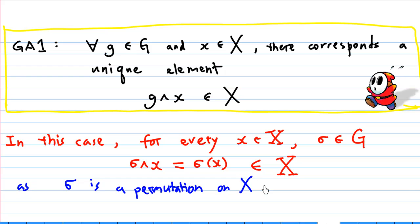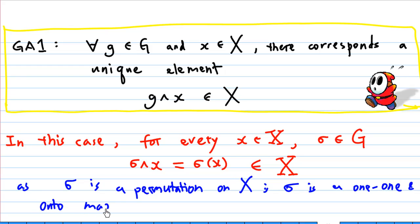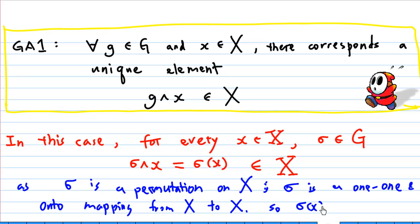This means that sigma is a one-to-one and onto mapping from X to X. Therefore, you should expect sigma(x) to belong to the set X for any element x. So GA1 is satisfied.